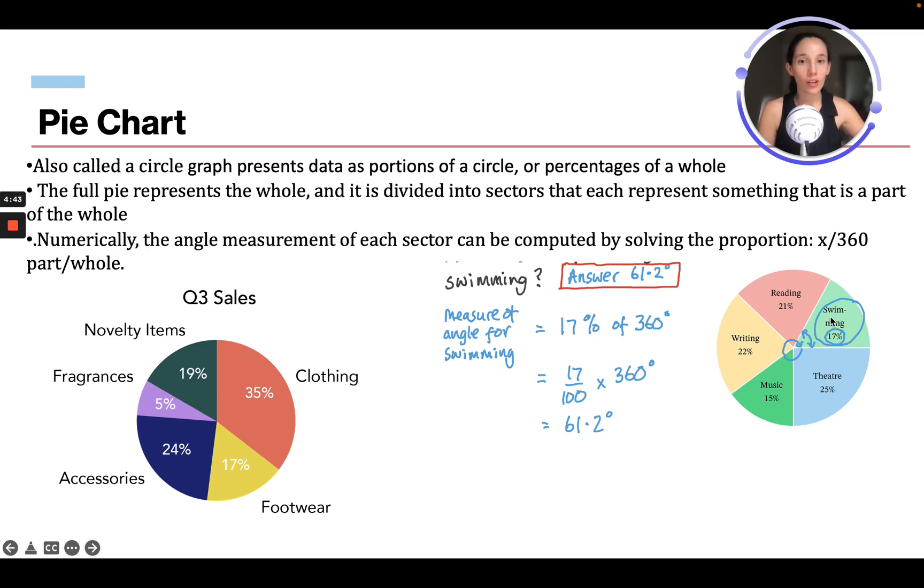And over here, if we wanted to find the angle for swimming, we can see that swimming is 17%, and if we want to go all the way around, we know that's 360. So 17% of 360 is 17 over 100 times 360, which is 61.2 degrees. So that is the angle right here from this line to this line.